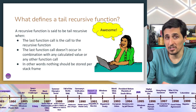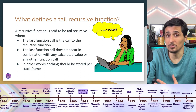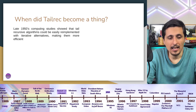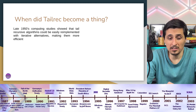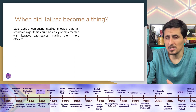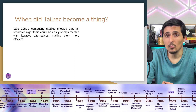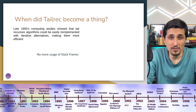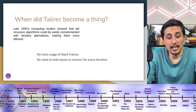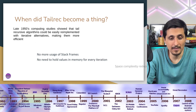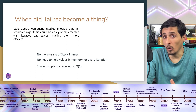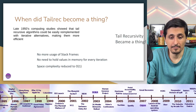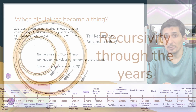In other words, nothing should be stored per stack frame, which is great because we don't need to store values in each of the stack frames. But when did tail rec become a thing? Tail rec became a thing in the late 50s, when computing studies were developed and showed that tail recursive algorithms could be easily re-implemented with their iterative counterpart. So no more usage of stack frames to store variables, and we wouldn't need to hold values in memory for every iteration. Plus, the space complexity would be reduced to O(1), meaning the space needed in memory would never change. Because of this, tail recursivity became a thing.